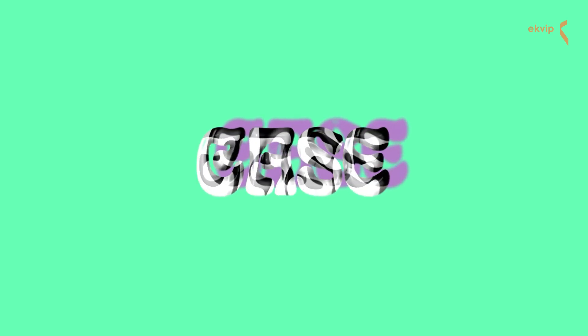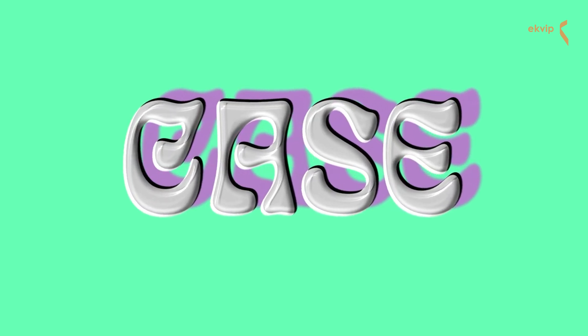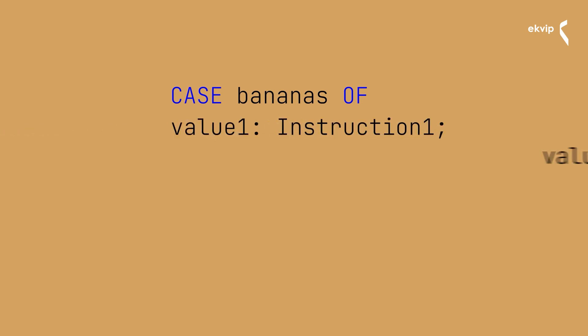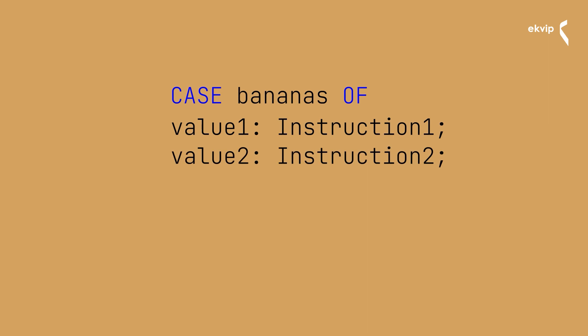Next we will talk about the CASE instruction. The CASE instruction is used to group multiple conditional instructions with the same conditional variable in a construct. The CASE instruction tests the value of a variable of an integer data type. Depending on the value, different instructions can be executed.